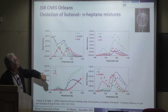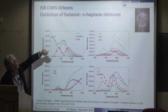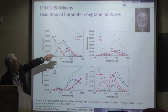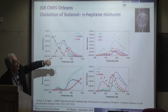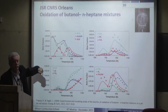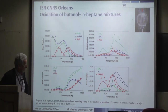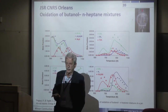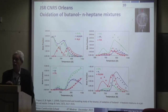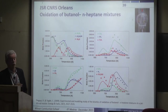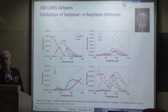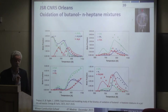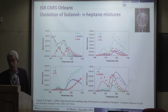Results from the CNRS Orléans jet stirred reactor include data on butanol/normal heptane mixtures. They typically work at one or ten atmospheres with a contact time on the order of 0.7 seconds at high pressure and shorter times at lower pressure.